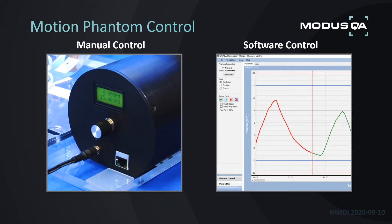This is only available on the CT-based Phantoms, but with those Phantoms you also have the option of connecting to our software suite, which allows you to import waveforms from an SGRT system and replay those waveforms on the actual Phantoms. You can connect directly with an Ethernet cable to your laptop, or connect through a local area network.